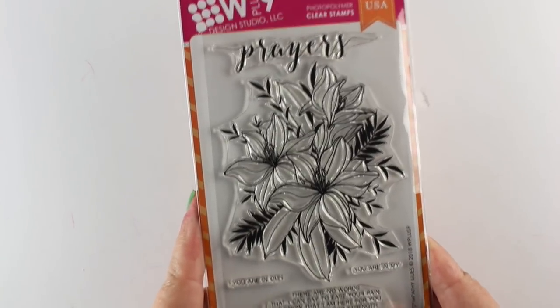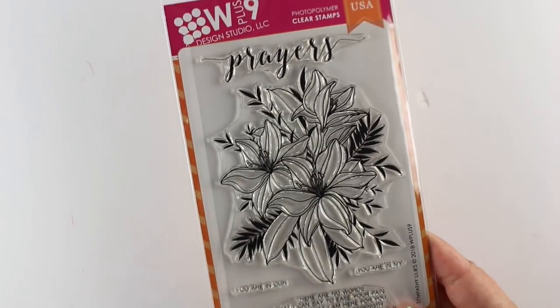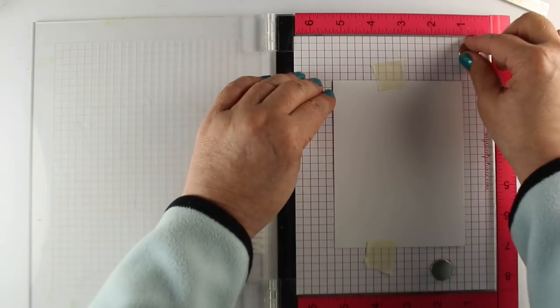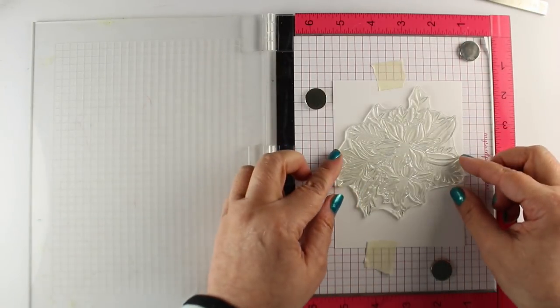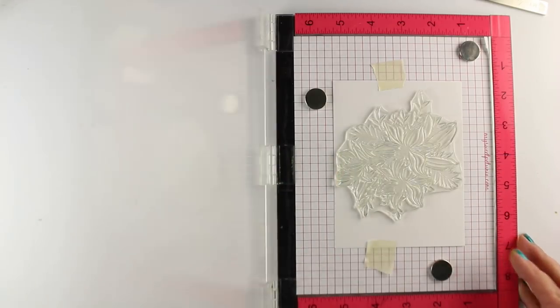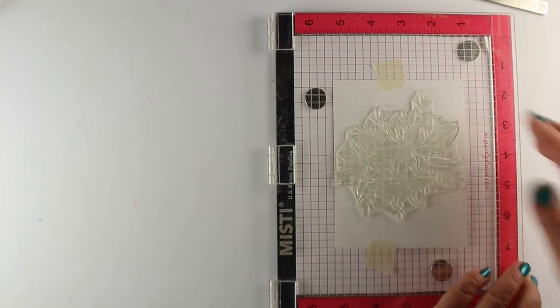It's a stamp set from WPlus9, it's a sympathy set, and who doesn't need a sympathy card? So make one of these while you're not sad, so that it doesn't break your heart when you're making one because you need it. Put it in your stash and be ready to go.